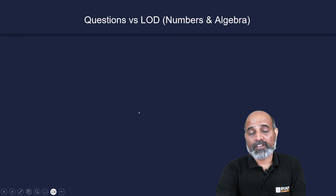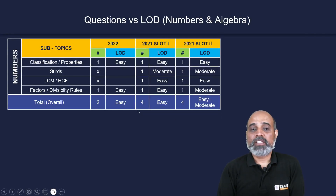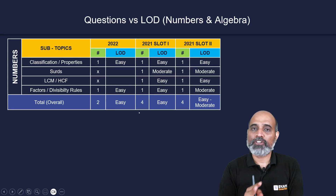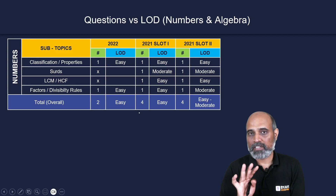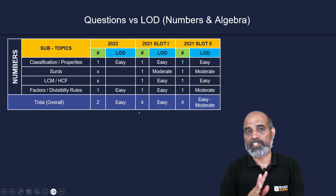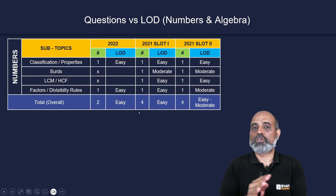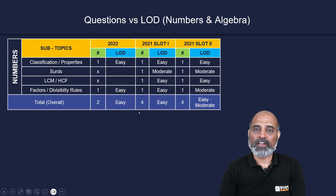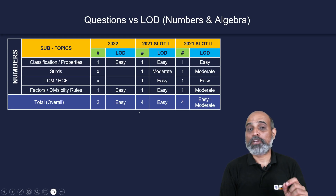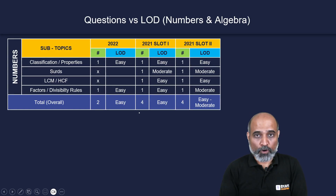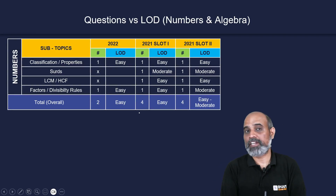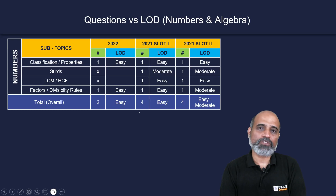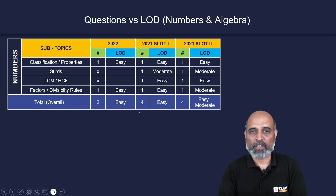Moving to numbers: in last year's CMAT, there were only two questions. One was from classification or properties of numbers (easy), and one was based on factors or divisibility rules (also very easy). In 2021 slot one, there were four questions — one each from classification/properties of numbers, surds, HCF/LCM, and factors/divisibility rules. Almost all were easy, making numbers an easy subtopic overall.